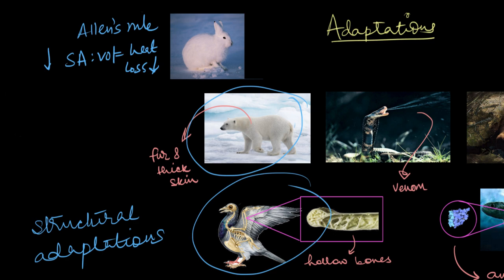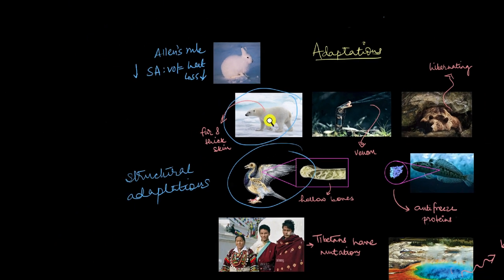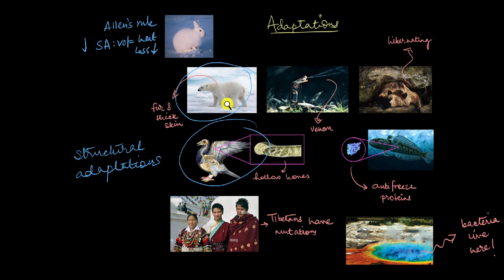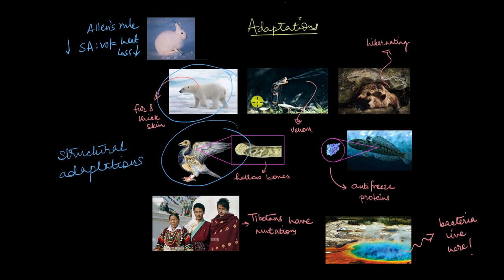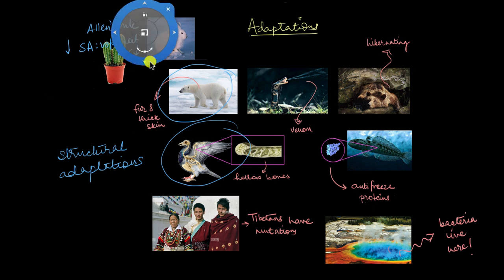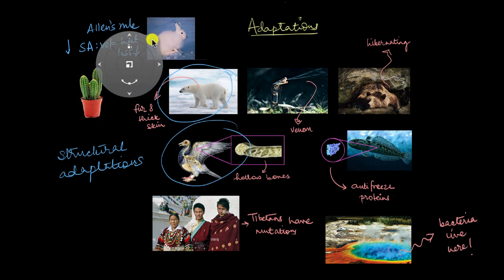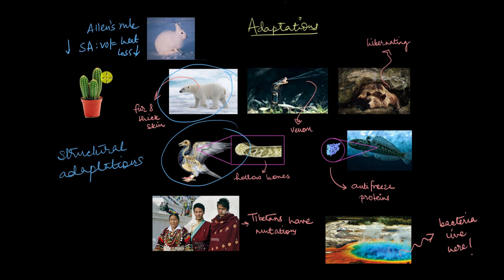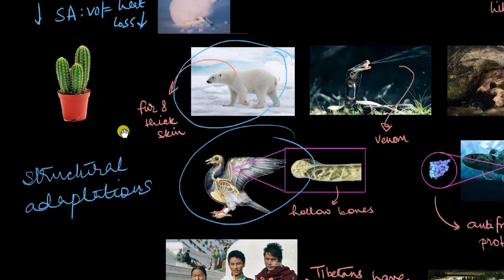Now, structural adaptations aren't just limited to animals only. You will find structural adaptations in plants as well. And a very famous plant is the cactus, which is not in the right place. So let's move this a little bit. Okay, there we have it. So this cactus right over here has many structural adaptations. Again, let's take a closer look.